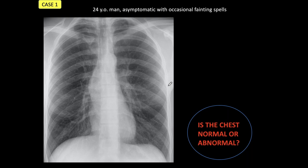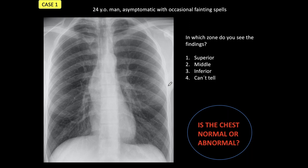And in case you find it abnormal, I'm going to offer you two options. In which zone do you see the findings? Is it in the superior, middle, inferior zone, or you cannot tell? I suggest that you stop the presentation, look carefully at the PA film, and when you are sure of your diagnosis, come back to the presentation.